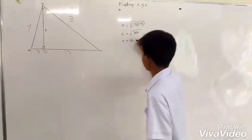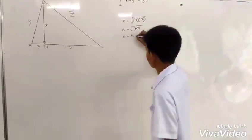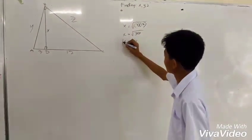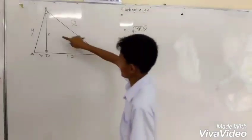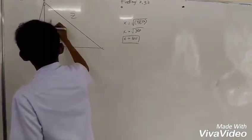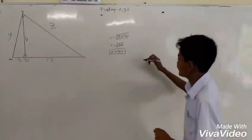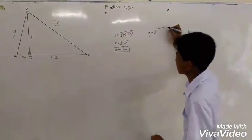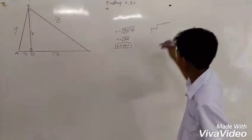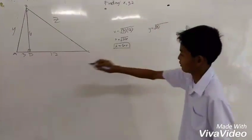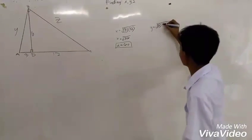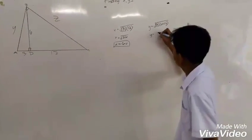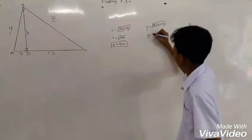So, x is equal to 6 units. Let us substitute the value. Now let us find y. y is equal to the square root of 3 multiplied by the whole line segment 3 plus 12. So, the answer is y is equal to the square root of 45.